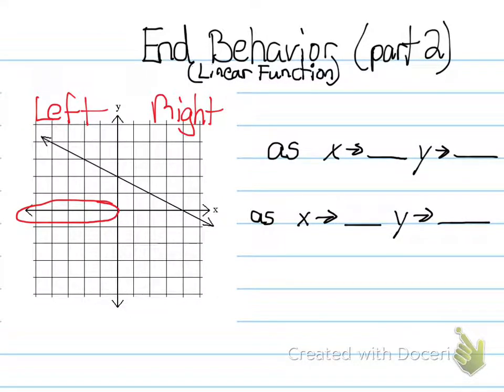So this first statement that says as x approaches blank, I'm going to say my x is approaching negative infinity, because this is going to represent the left side, and this will be the right side.